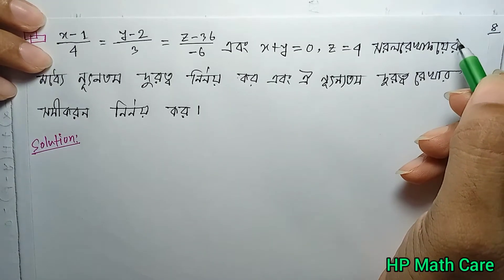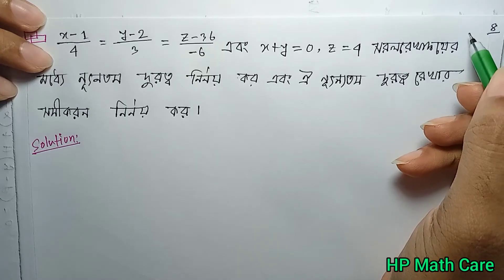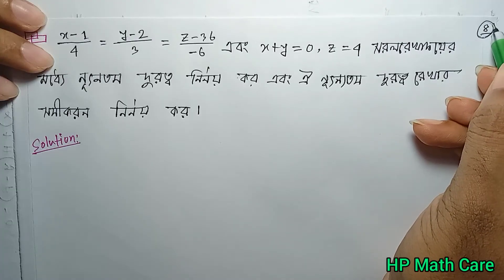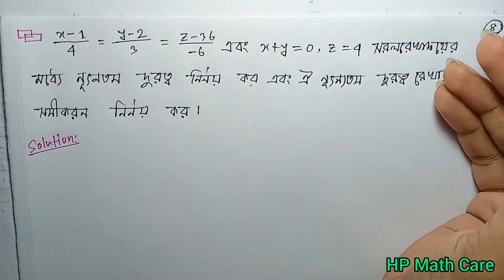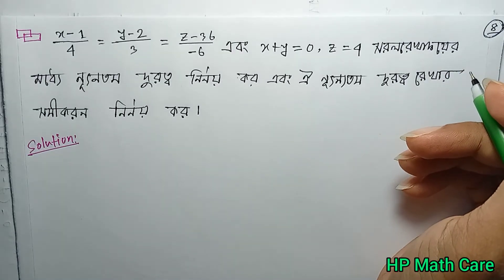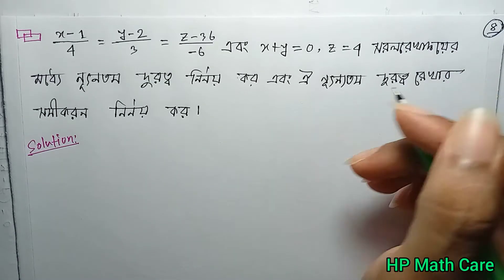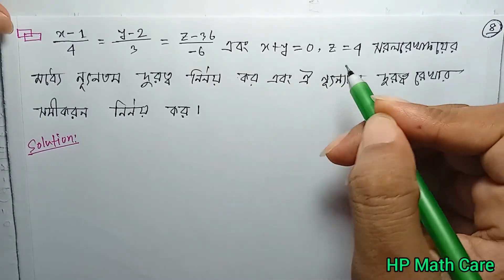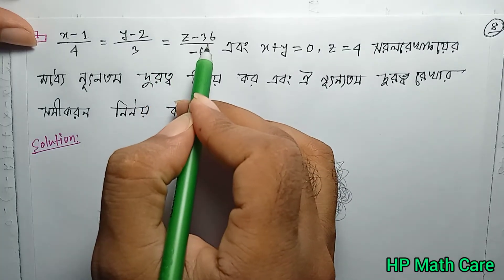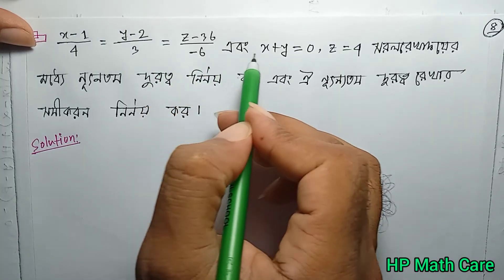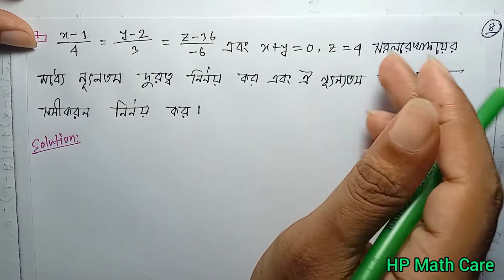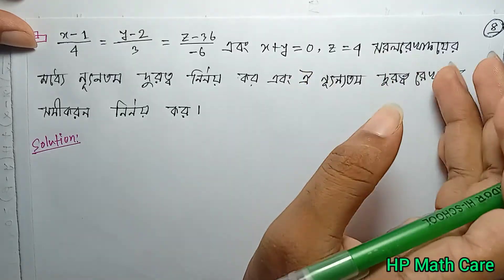The vector geometry problem is presented. The straight line is given as (x-1)/4 = (y-2)/3 = (z-36)/(-6), with x plus y equals 0 and z equals 4. This is the vector setup according to the given conditions.